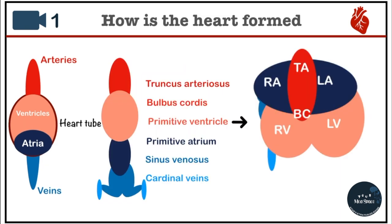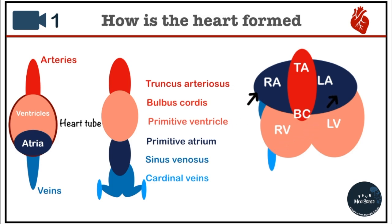To make it very clear, the primitive ventricles have now become the right and left ventricles. The bulbous cordis is present between the ventricles and the truncus arteriosus, and the truncus arteriosus is out here giving rise to the main arteries. Then we have the primitive atrium giving rise to the right and left atrium. After this, we have the sinus venosus and cardinal veins — and if you don't know what those structures are, that's completely fine because that's what we're going to be focusing on next.